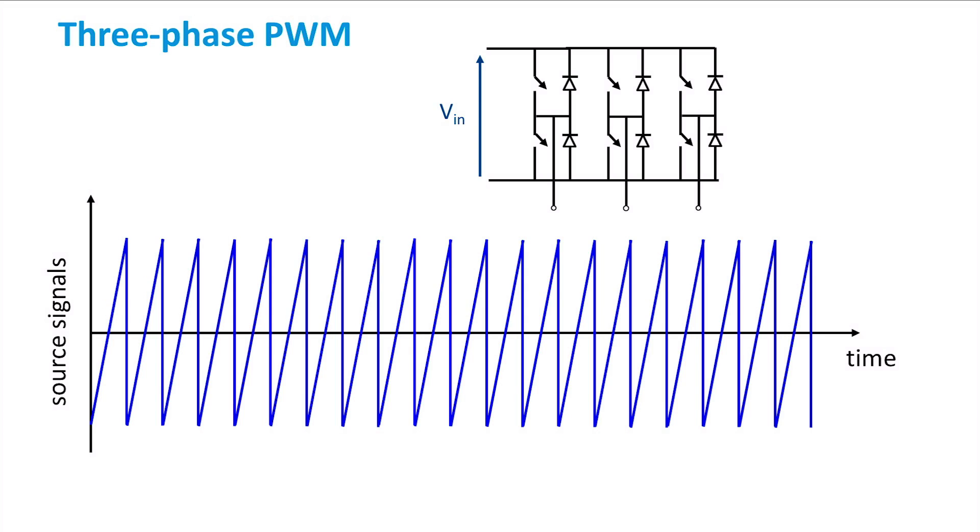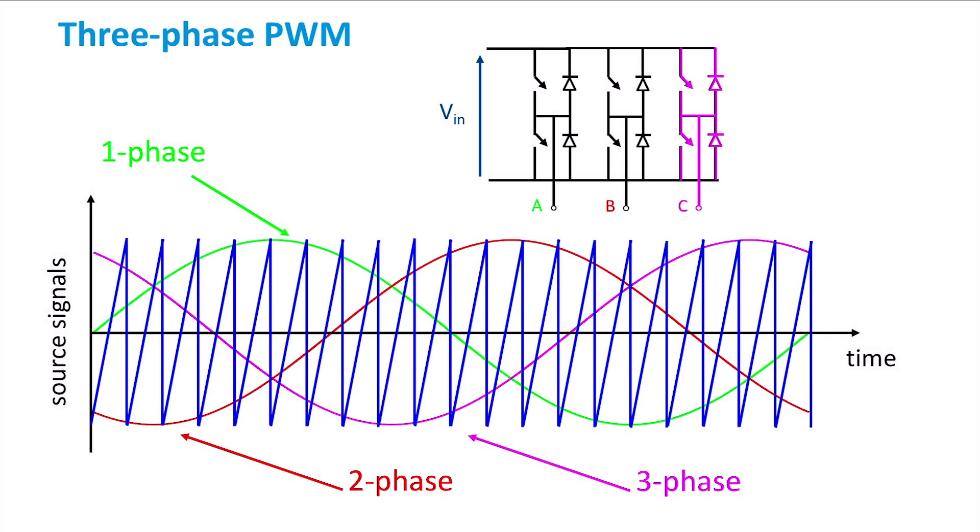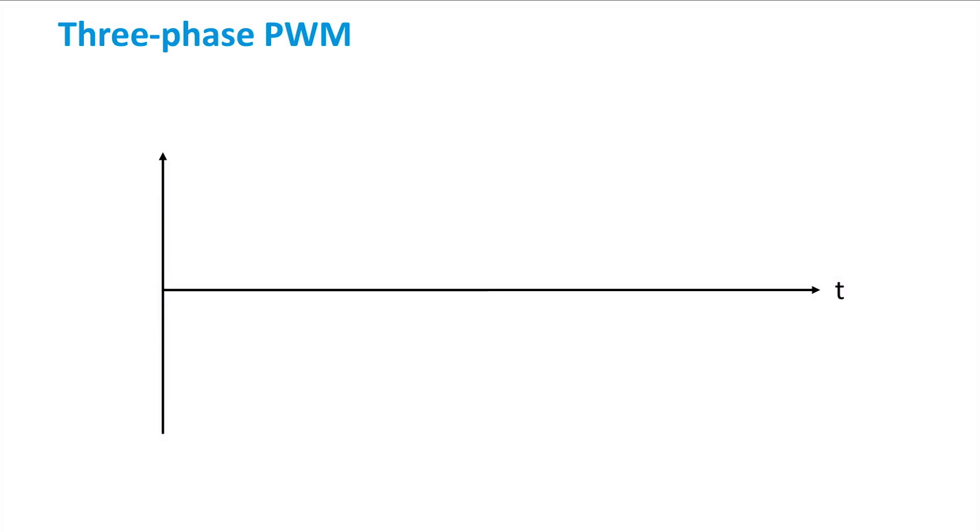A first phase controls the first leg A. Similarly, the second phase acts on the switches on leg B, and the third phase on the switches on leg C. Comparing each phase with a neutral point, a pulse-train output similar to the bipolar single-phase PWM is found.